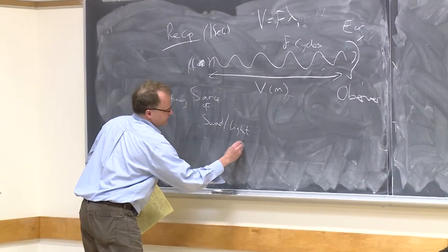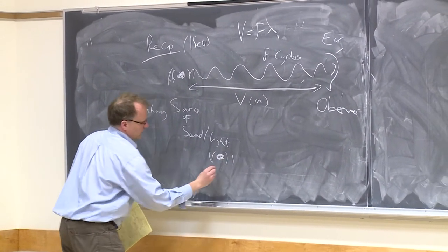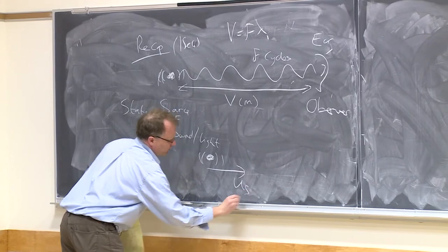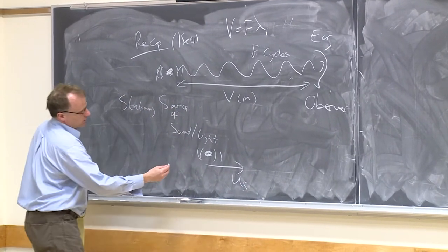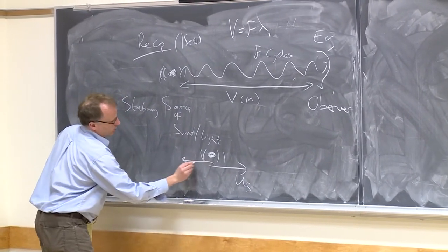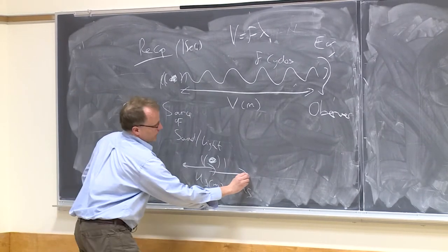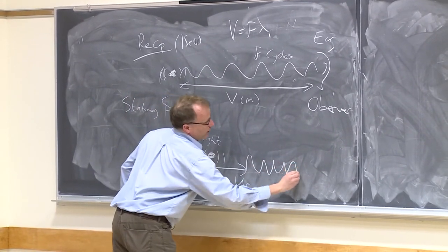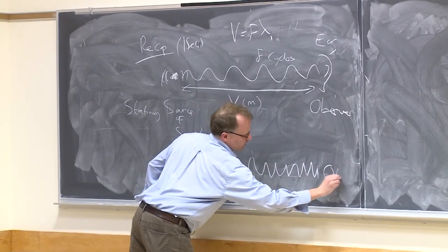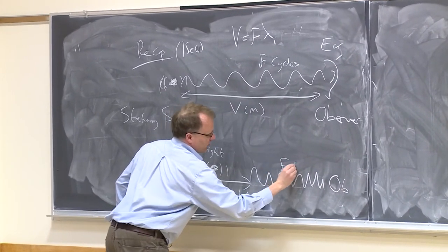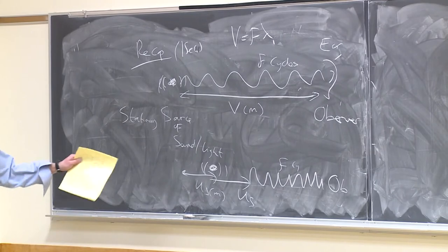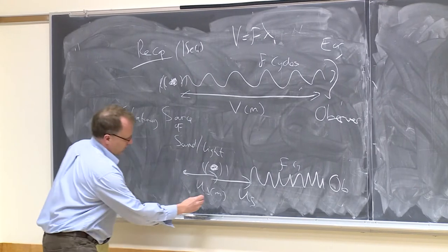So if your source moves in some direction with a velocity US, then in one second it would have moved US meters. But it would still be giving out the same number of waves per second. So this would still be f cycles. But now f cycles occupies a shorter distance.